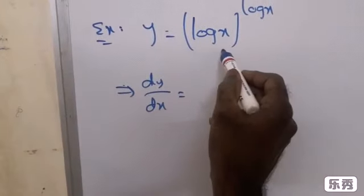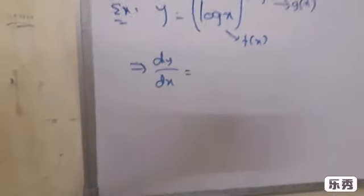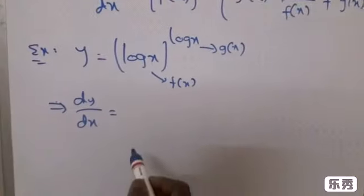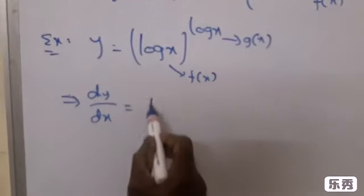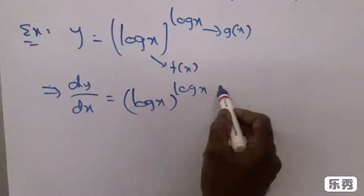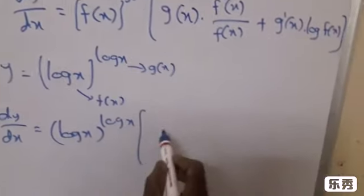Now observe, both f(x) and g(x) are log x in this example. Just directly substitute in the formula: (log x)^(log x) into... We have g(x) here, which is log x, into...